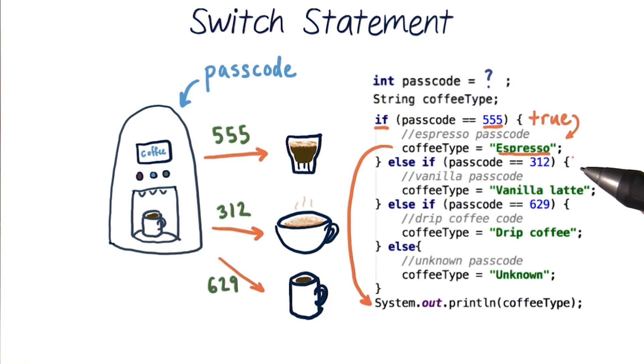And the rest of this code works similarly. We check if the passcode is equal to 312. If it's not, we then check if it's equal to 629. And if it's not equal to any of these, our coffeeType will be set to unknown.